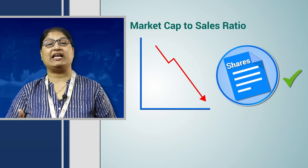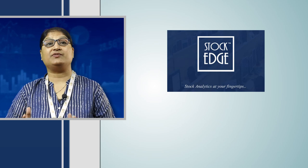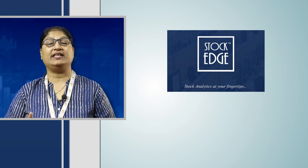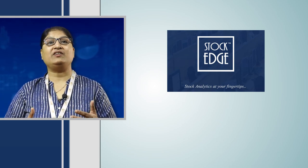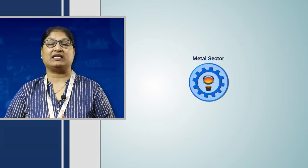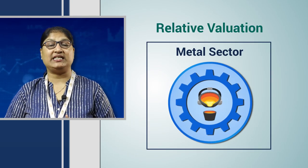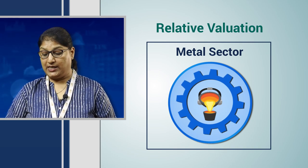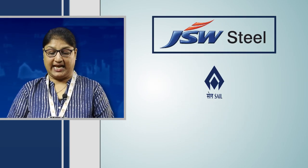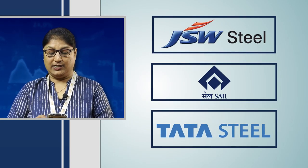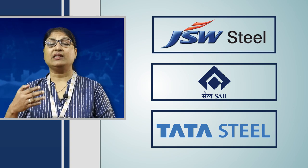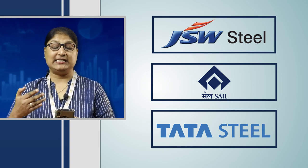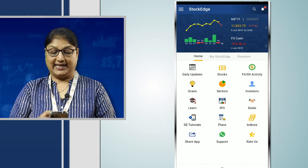Let us understand this today with the help of Stockage — finding companies with lower market cap to sales ratios within the same sector. We will check three companies in the metal sector under relative valuation to see whose market cap to sales ratio is the lowest. We will take JSW Steel, SAIL, and Tata Steel to determine which has the cheapest ratio.